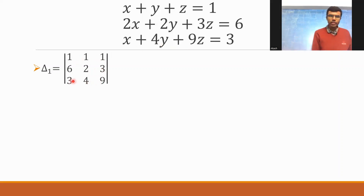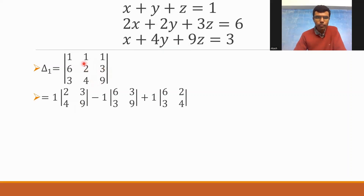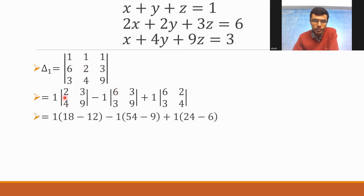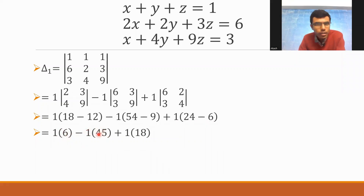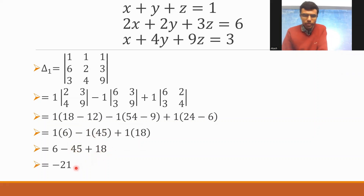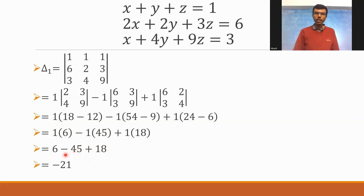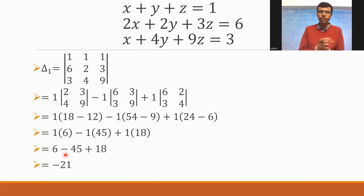Using the same basic process of expanding the determinant: 1 into det(2,3,4,9) minus 1 into det(6,3,3,9) plus 1 into det(6,2,3,4). This gives: 2 nines are 18 minus 4 threes are 12; minus 1 into 54 minus 9; and 24 minus 6. So 18 minus 12 is 6, 54 minus 9 is 45, and 24 minus 6 is 18. That gives 6 minus 45 plus 18. Six plus 18 is 24, and 24 minus 45 is minus 21. So delta 1 is minus 21.